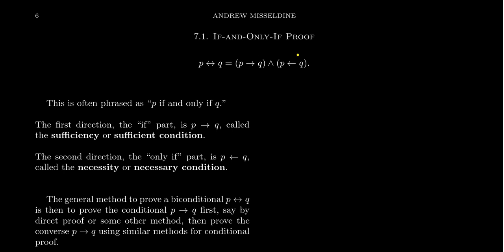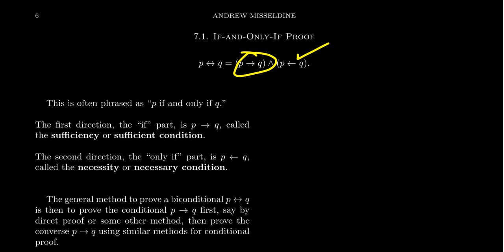Then you have to also prove that the converse is true. In general, given a conditional statement, its converse might not be true. But if the biconditional statement is true, then P implies Q and its converse must both be true. This converse is itself a conditional statement, so you can prove it with direct proof or indirect proof. You can mix it up — this one with direct proof, this one maybe with contrapositives or contradiction.